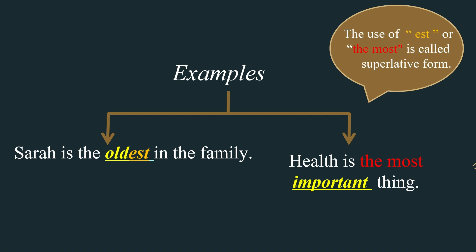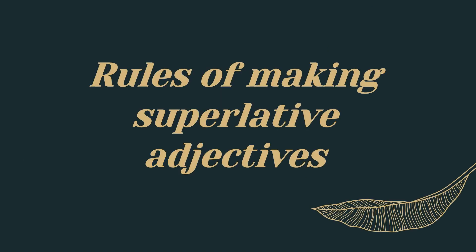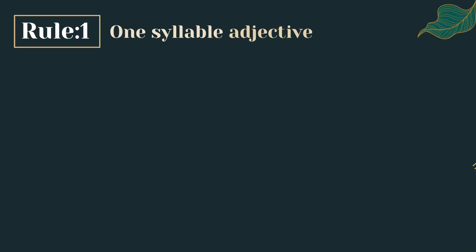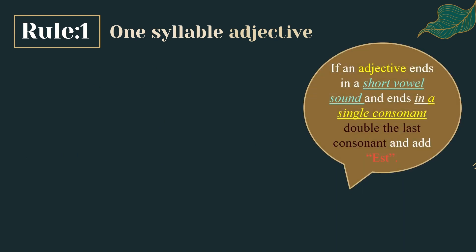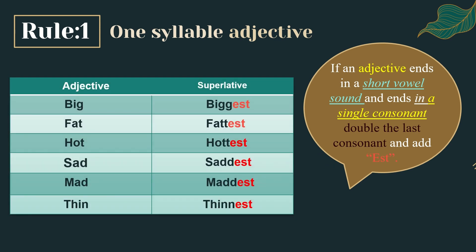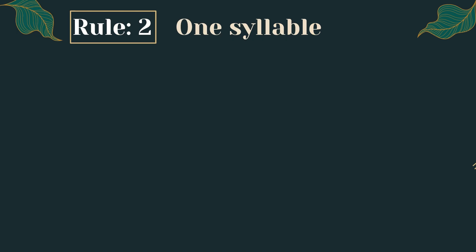Rules of making superlative adjectives. Rule number one: one-syllable adjective. If an adjective ends in a short vowel sound and ends in a single consonant, double the last consonant and add -est. For example, 'big' changes to 'biggest.' As you can see, big ends in a single consonant, so we double the last consonant and add -est. Further examples: fat → fattest, hot → hottest, sad → saddest, mad → maddest, thin → thinnest.